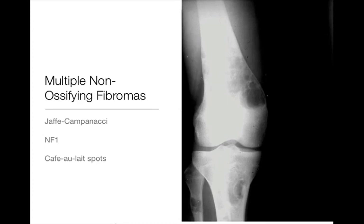Multiple non-ossifying fibromas: the single non-ossifying fibroma is pretty straightforward, seen not uncommonly in kids or young adults, often in the tibia. These are eccentrically or cortically-based lesions — geographic with a narrow zone of transition and a sclerotic border. There is a rare syndrome associated with multiple non-ossifying fibromas known as Jaffe-Campanacci, associated with café-au-lait spots. Sometimes you'll see multiple non-ossifying fibromas in neurofibromatosis type 1. There is no malignant risk; it's a quite rare syndrome you may never see.